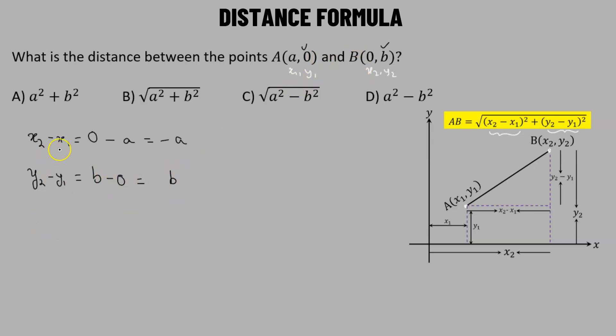So now that we have the value of x2 minus x1 and y2 minus y1, the distance between A and B, that means AB, is going to be the square root. Underneath the square root, we need the square of the difference of the x coordinates, so that's negative a squared, and this will be added to the square of the difference of the y coordinates, so that's simply b squared.